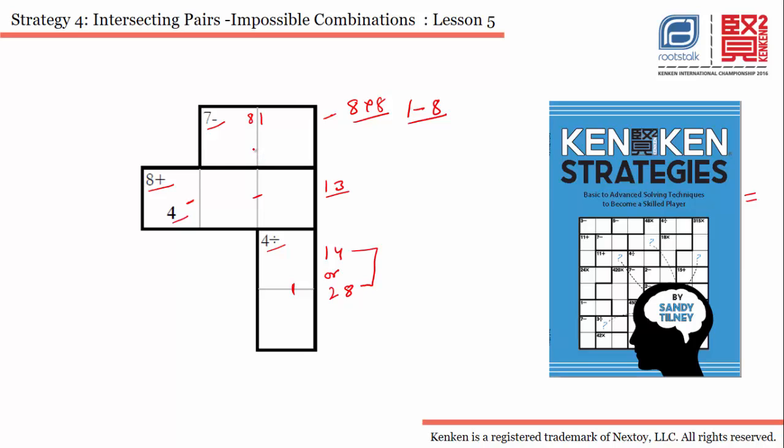Now if you observe these two cages, this one and this one, you will observe both of these cages have 1. That means both these columns, this one and this one, will have 1 through these two cages.